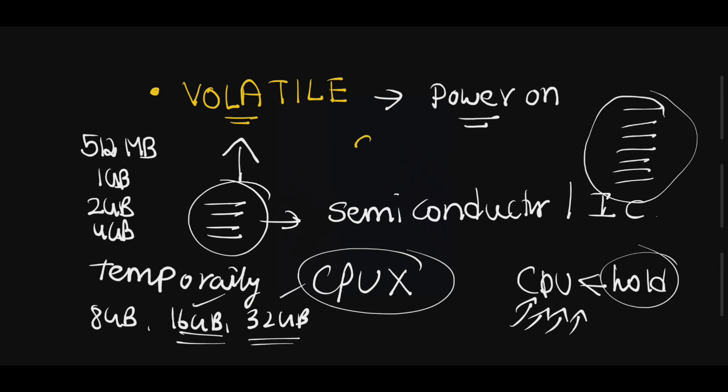RAM is classified into two types: SRAM and DRAM. SRAM stands for Static RAM — Static Random Access Memory.